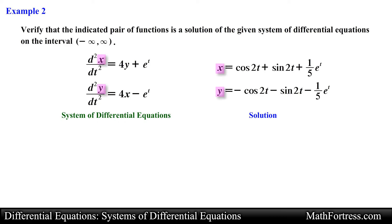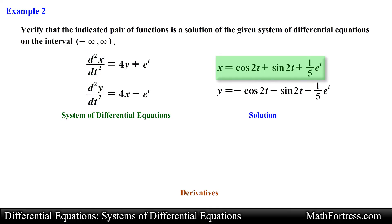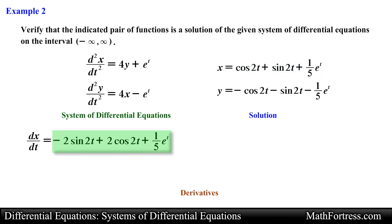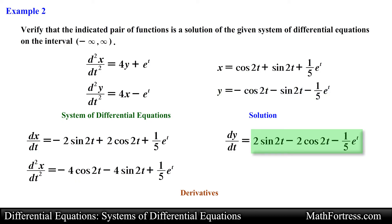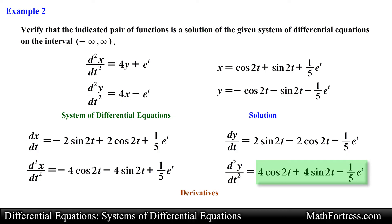Notice that we once again have two dependent variables x and y, both of which contain the independent variable t. Similar to the first example, let's first find the derivatives of the dependent variables with respect to t. We need to find the second derivative of each function, so let's find the first derivative of x with respect to t. Taking the derivative term by term along with the chain rule we obtain the following expression. Next we take the derivative once more; taking the derivative a second time results in the following expression. Then we find the second derivative of y with respect to t by taking the derivative term by term and applying the chain rule, then differentiating once more to obtain the second derivative.